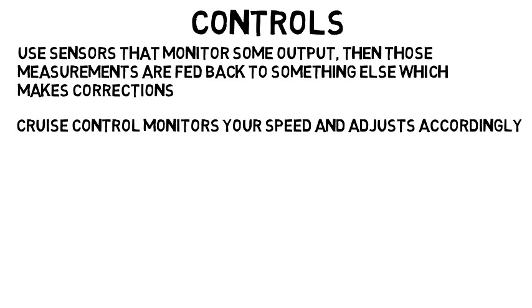For example, your car's cruise control continuously monitors your speed and adjusts accordingly if it changes. Without that feedback of your speed, if your car started going up a hill, the speed would not adjust.